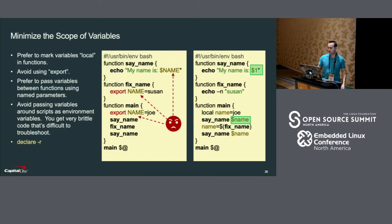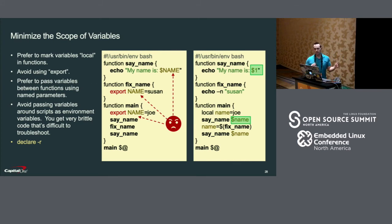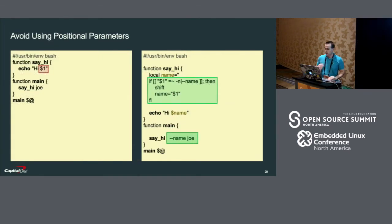That brings me to what I consider the most important principle of maintainable bash scripting. You should minimize the scope of variables as much as possible by preferring to use 'local' whenever you can. I avoid using 'export'. Also, if you must use a global variable, I highly recommend making it read-only, and you do that with the 'declare -r' statement.